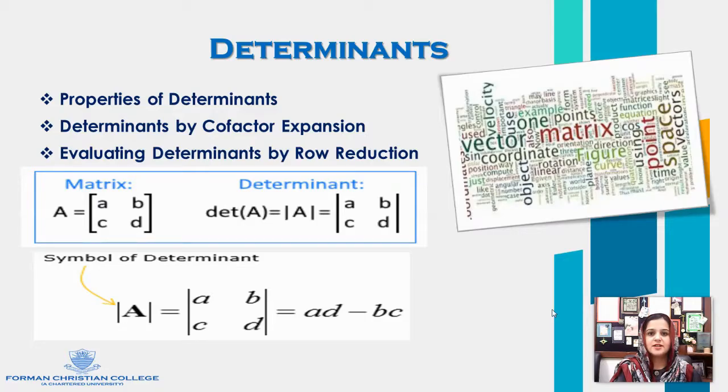We will evaluate determinants by using two methods. Number one is by cofactor expansion, and number two is by row reduction method.